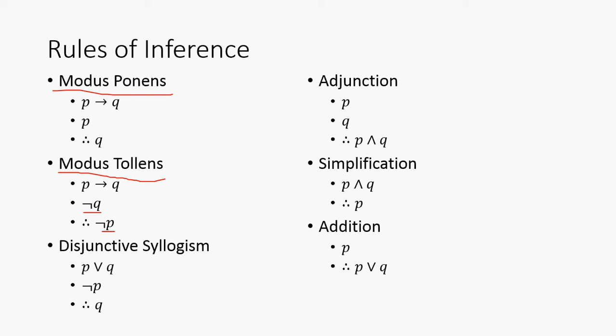And then, conversely, simplification is going to be P and Q, therefore P. Since P is true and Q is true, at least they're assumed to be true, then just P is going to be true if P and Q is true. And then, addition, because P is assumed to be true, adding stuff onto it, like or Q, isn't really going to affect it because P is already true.